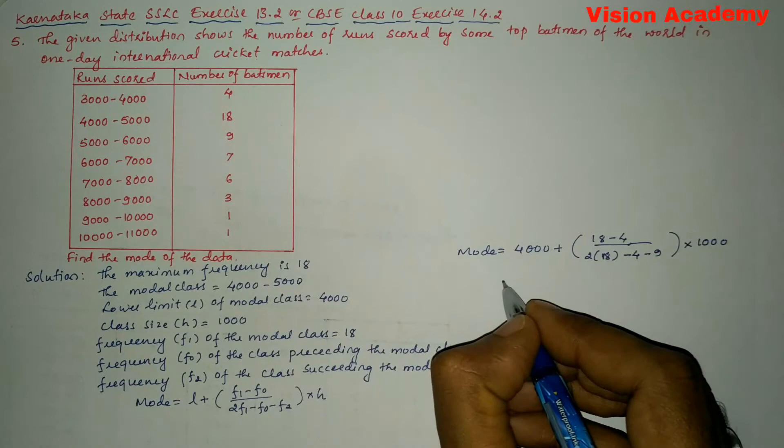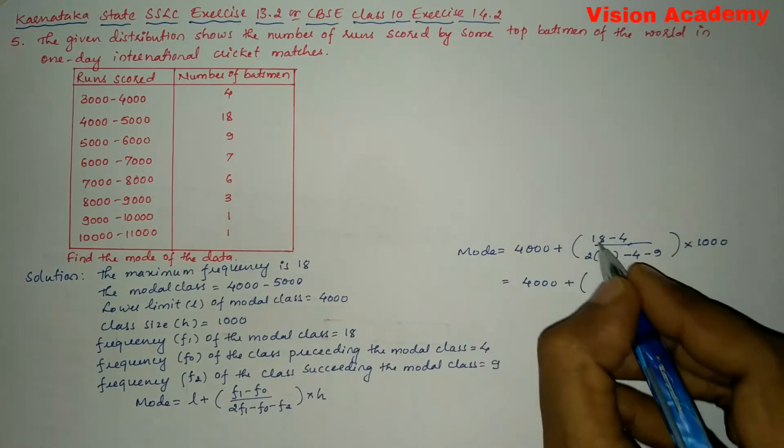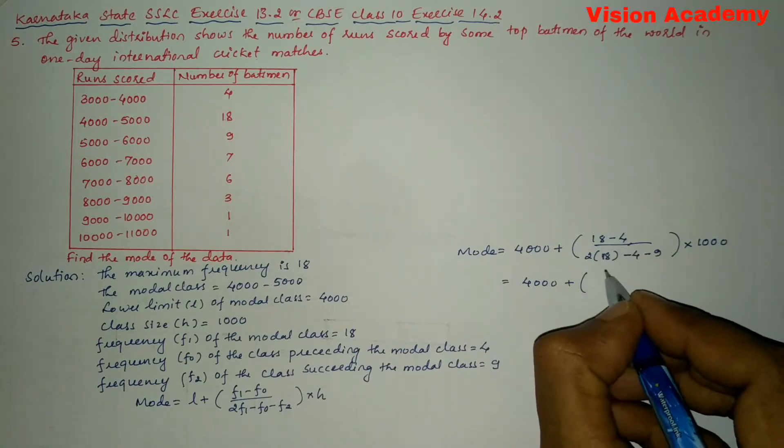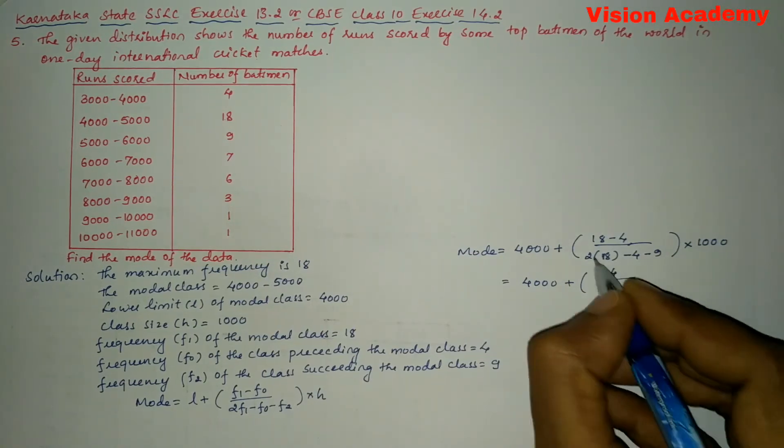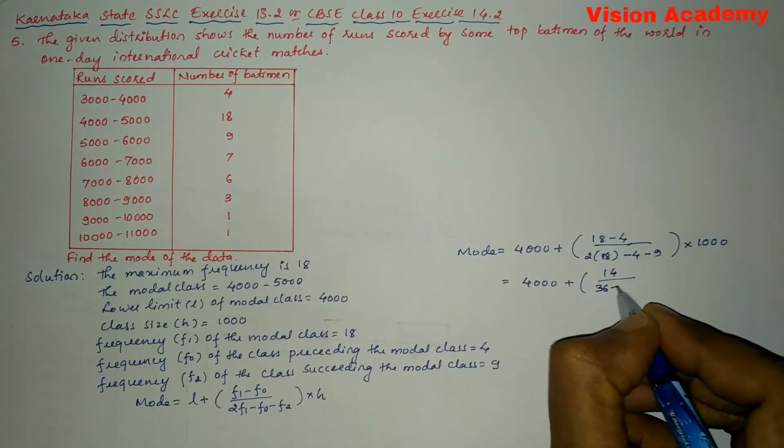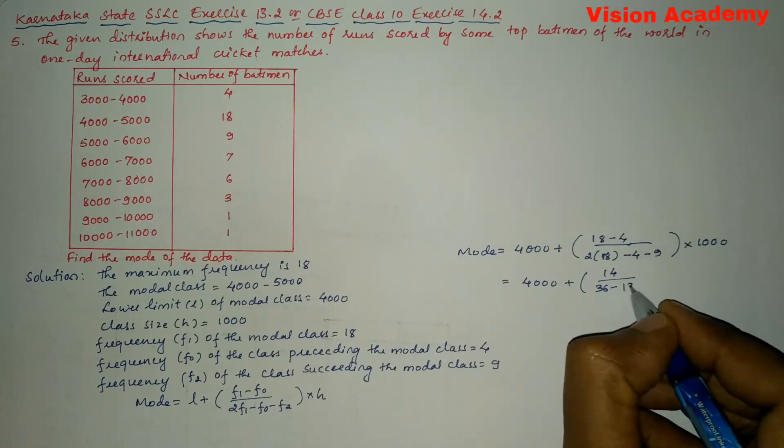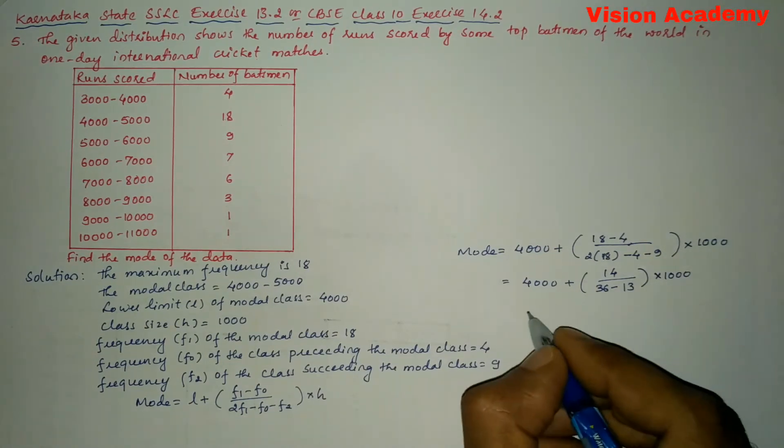Now let us further simplify. So 4000 plus 18 minus 4 gives us 14 divided by 18 times 2 is 36 minus 4 minus 9 gives us minus 13, times 1000.